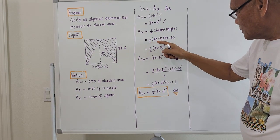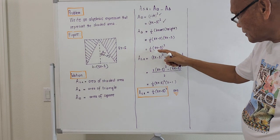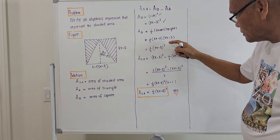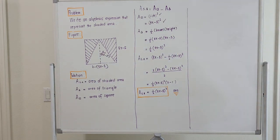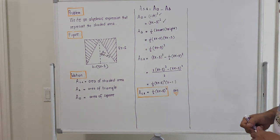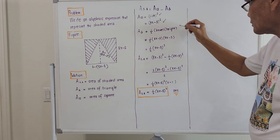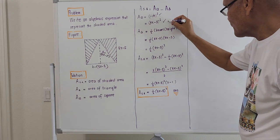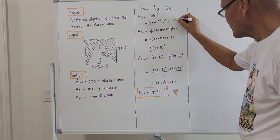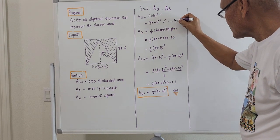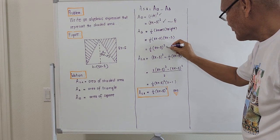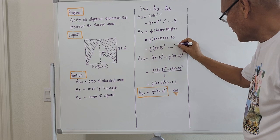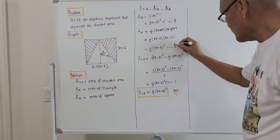Since both the base and height are the same term (8x − 5), the area of the triangle simplifies to one half times (8x − 5) quantity squared. Both the area of the square and the area of the triangle are now expressed in terms of algebraic expressions.